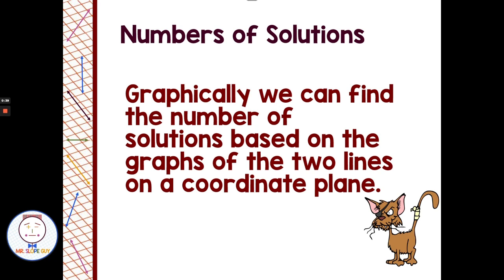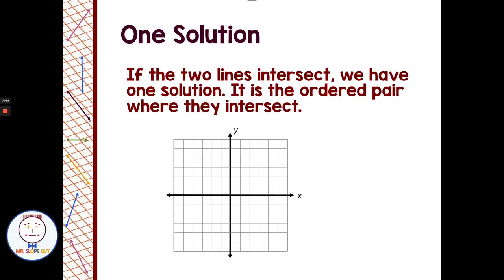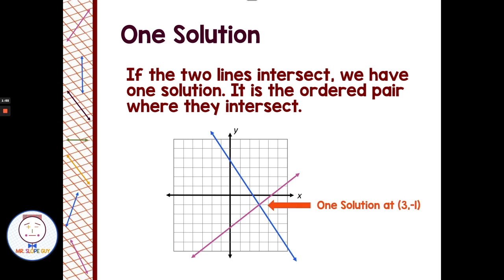The first thing we could have is one solution. If the two lines intersect, we have one solution — it is the ordered pair where they intersect. We could use our methods for graphing like slope-intercept form, t-tables, or intercepts. If we find the point where they intersect, that ordered pair — for example, (3, -1) — would be the solution, allowing us to solve for two variables at one time.